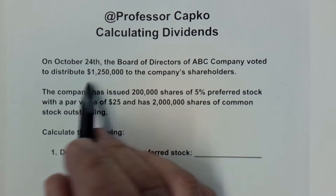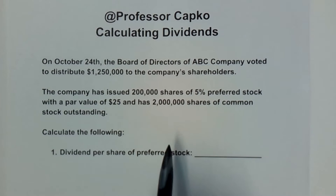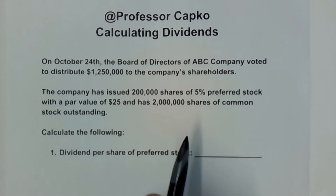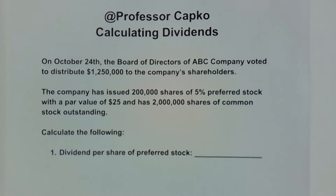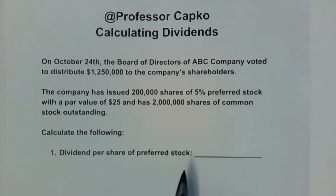The distribution of dividends has been voted on by the board of directors — in this case, $1,250,000. In other words, $1,250,000 worth of the company's profits will be distributed out to the shareholders who are the owners of the company. Many times, this is why people buy stock in a particular company — to receive dividends, which is a portion or a share of the profit.